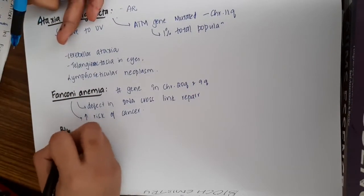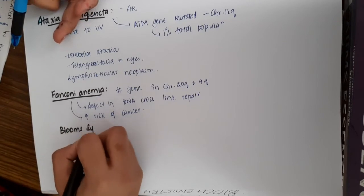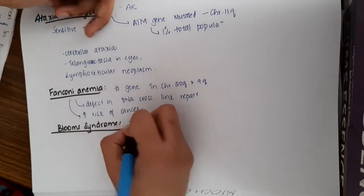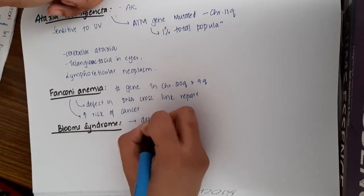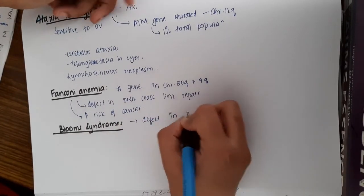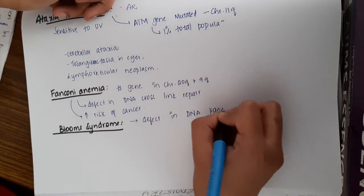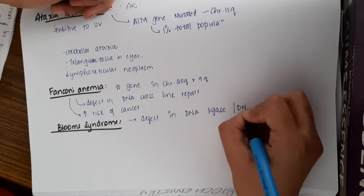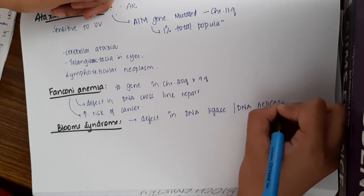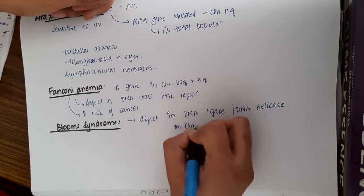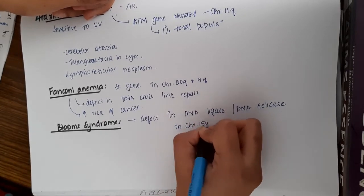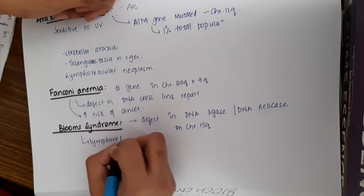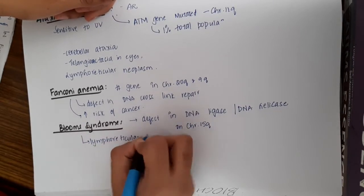The next DNA repair mechanism is called Bloom's syndrome. In Bloom's syndrome, there is a defect in DNA ligase, which will actually join the two nucleotide bases, or there can be a problem in DNA helicase, which is present on chromosome 15Q. This Bloom's syndrome also causes lymphoreticular malignancies.